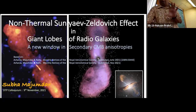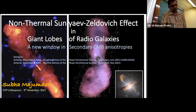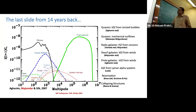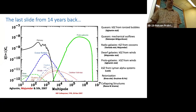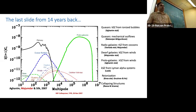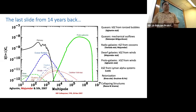Let me start by introducing something called secondary CMB anisotropies. This is a slide from 14 years back — an NSF colloquium at TIFR, 28 November 2007. This was the last slide of my talk at that time. My talk then was about doing cosmology with galaxy clusters, mainly looking at counting galaxy clusters and how they help us look at dark energy.